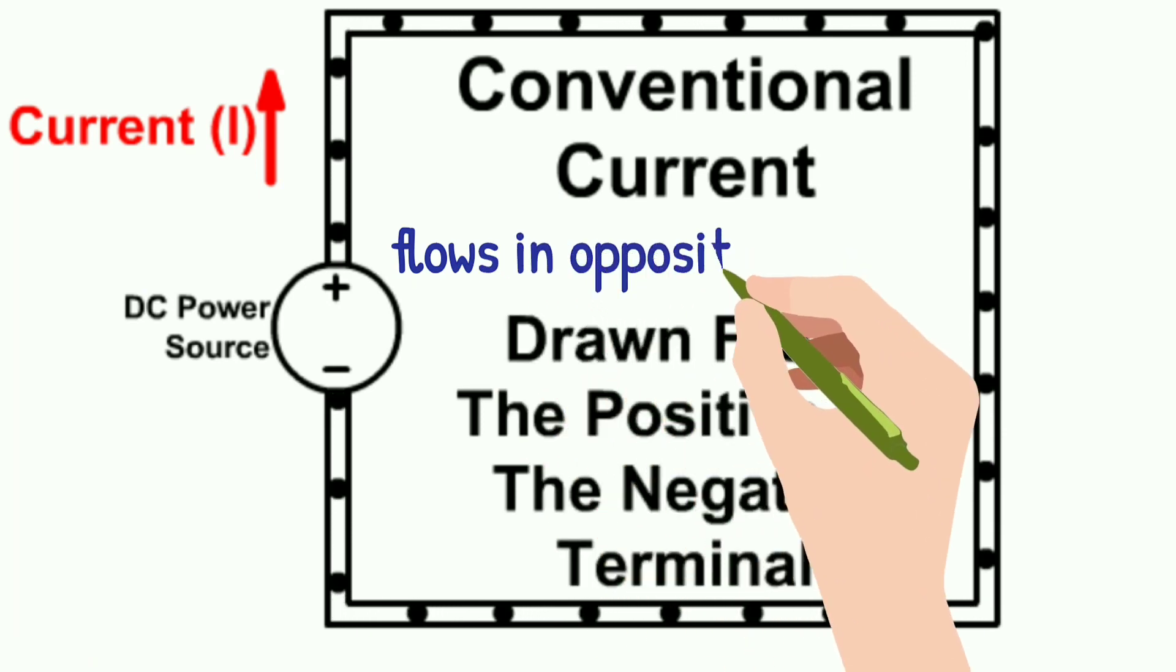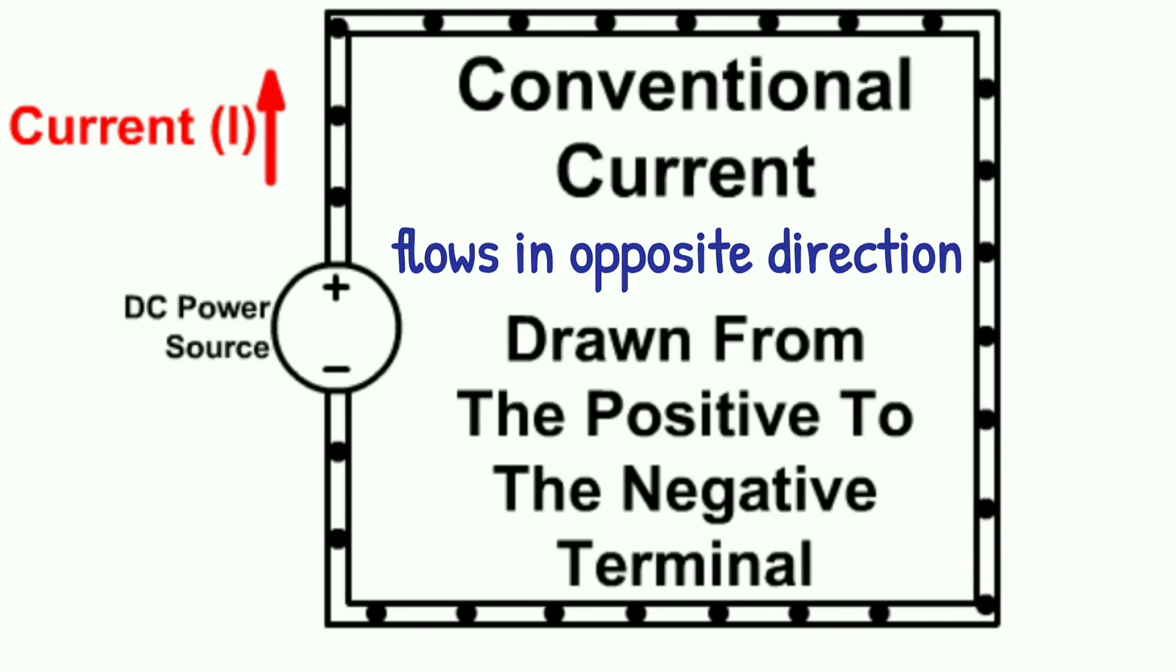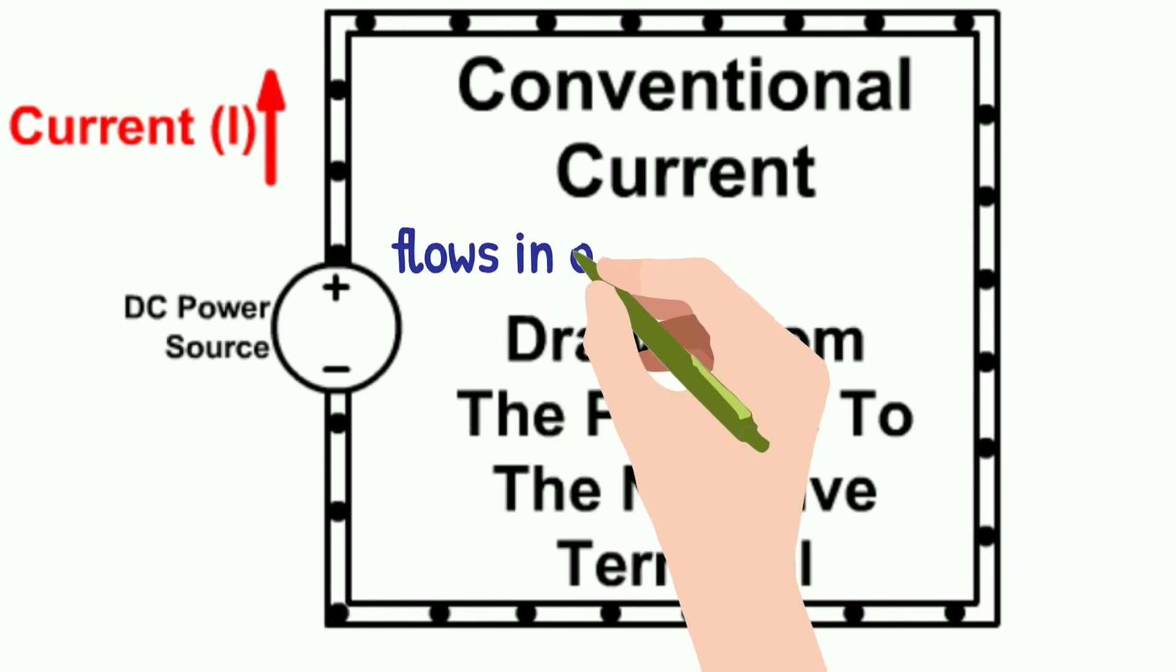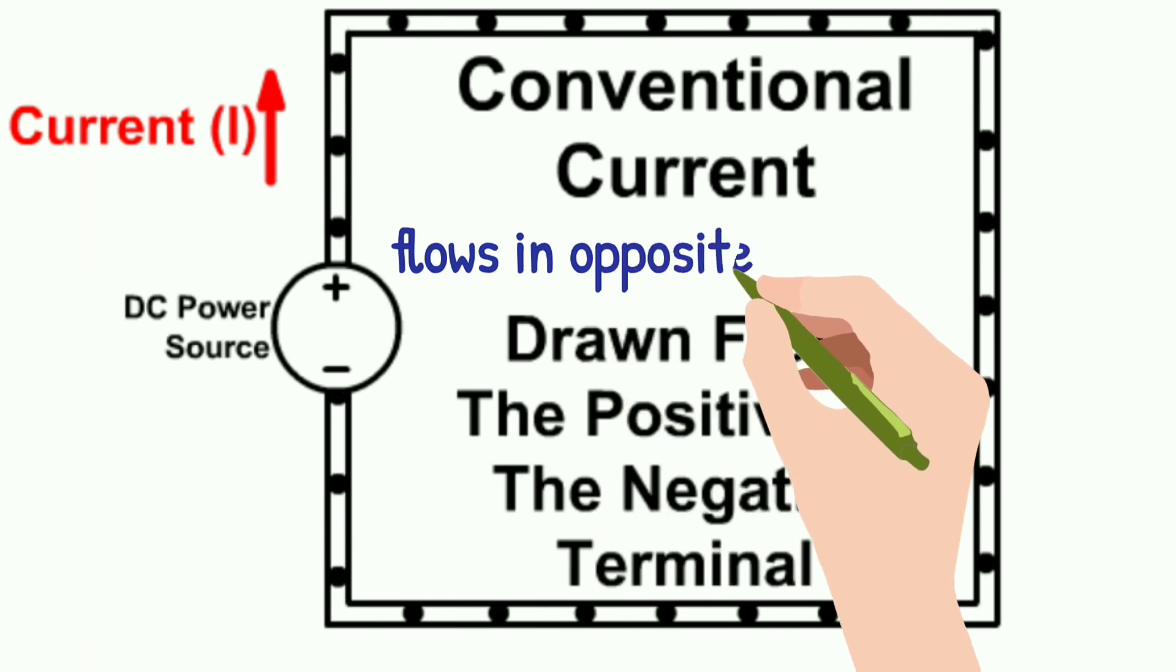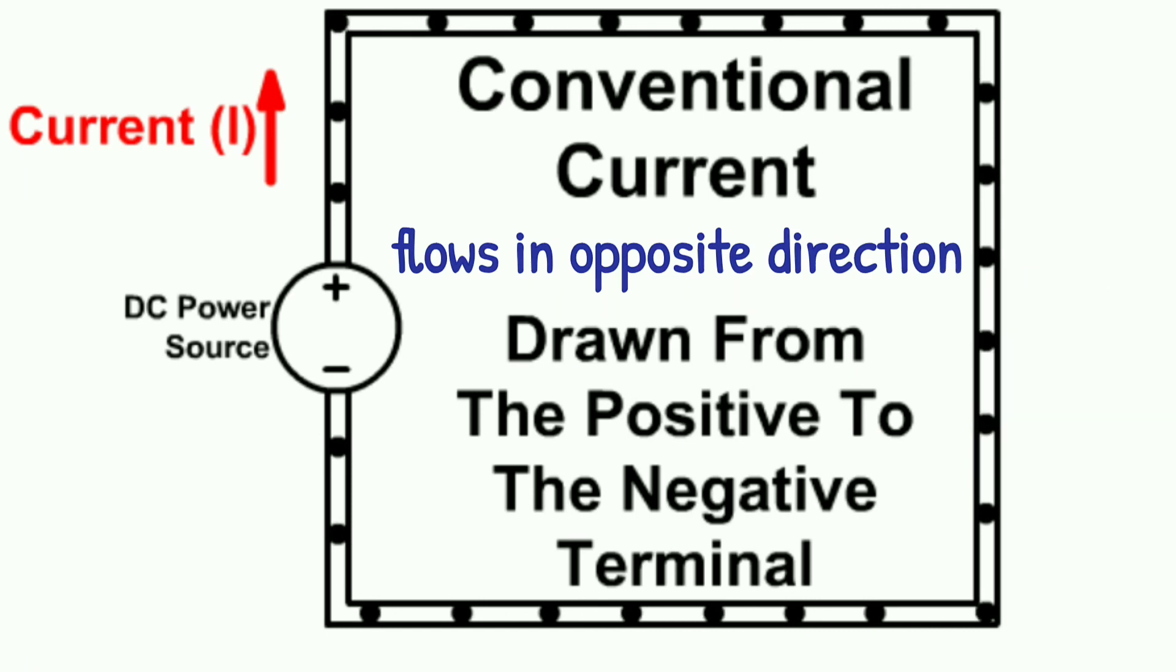Also, current is caused due to concentration difference. Water current moves from higher pressure region to low pressure region. Similarly, air moves from higher pressure region to low pressure region. So therefore, electric current is nothing but flow of charge from positive high potential difference to negative low potential difference. Hence the movement is in opposite direction.